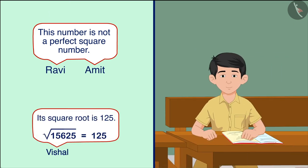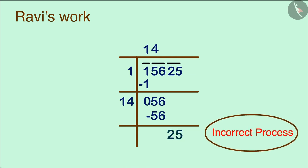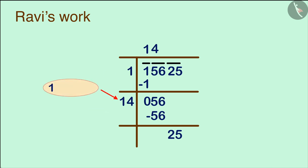Ravi solved it this way: in the end, he got 25 as a remainder. This process is incorrect because when the second division was done here, the number one, which was the first divisor, was not multiplied by two and the new divisor was not written.